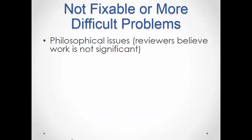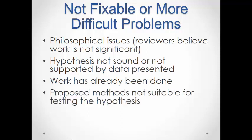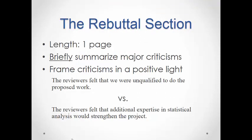There are tougher problems too. Philosophical issues where reviewers believe the work is not significant are hard to fix — it becomes a yes-it-is, no-it's-not argument. Hypotheses not sound or not supported by the data, work that's already been done, a seminal paper that came out answering your grant between submission and review, proposed methods not suitable for testing the hypothesis, and poor investigator or environment scores — those are really hard to fix. Hopefully being at UCLA the environment score won't be a problem, but it can be for certain labs.